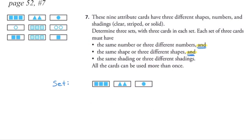I would choose an attribute to begin with. If we look at the shadings, we do not have three clear cards or three striped cards, so I know I'll need either three solid cards or one of each shading. Looking at shape, I only have one triangle card, so I can't build a set of all triangles. I have three circle cards, but two share the same shading, so let's begin with squares since that's the shape we have most frequently. I can see one square, two squares, three squares with the same shading.